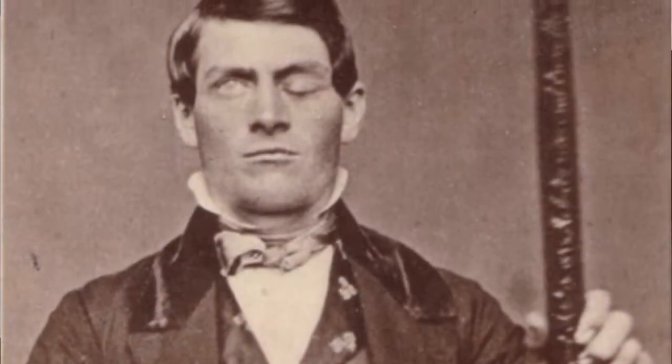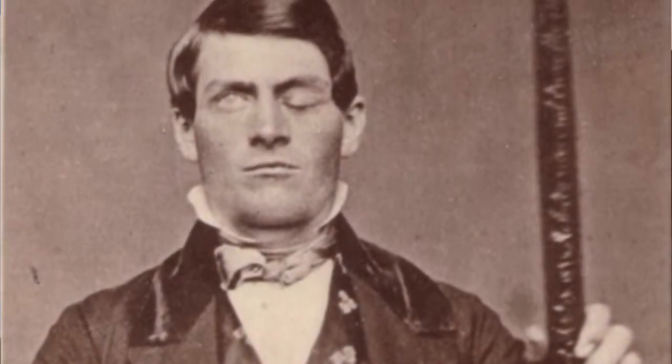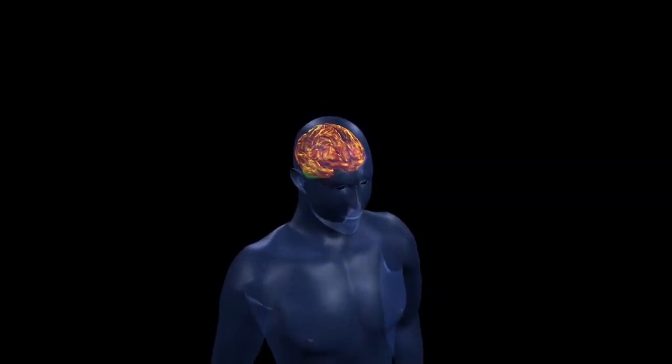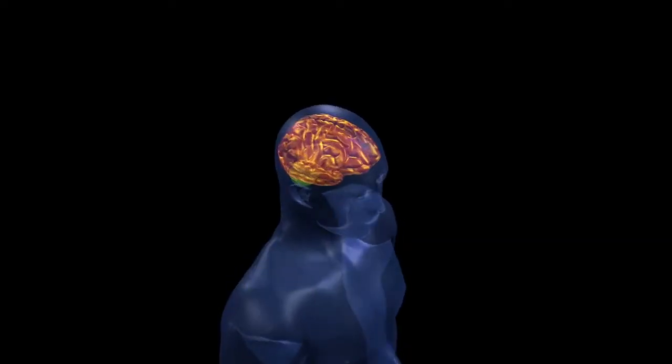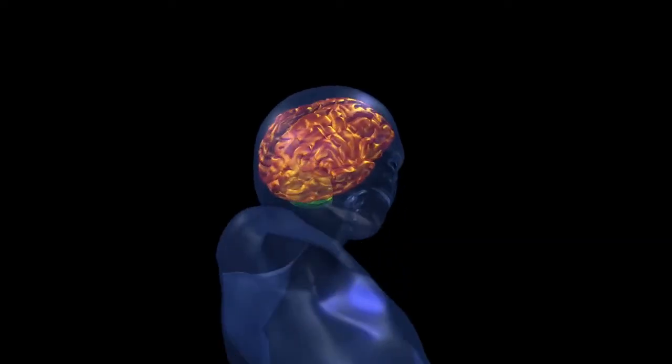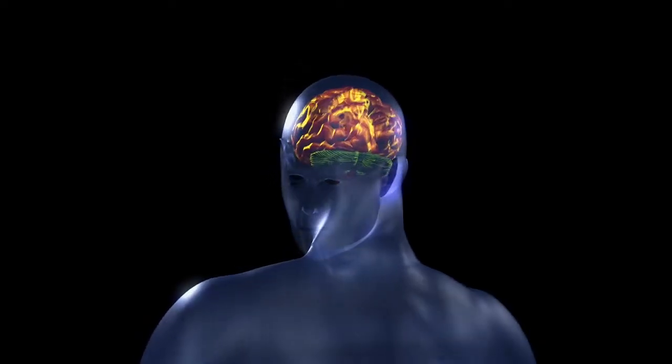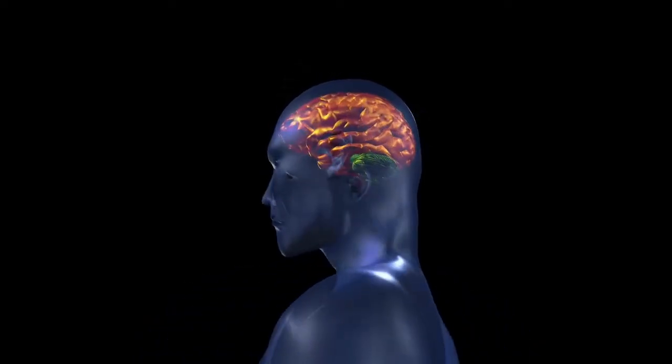Phineas Gage suffered a catastrophic injury when a tamping iron from his work on the railroad shot through his frontal lobe, causing permanent brain damage. But somehow, he survived. His doctor recorded his change in behavior and demeanor and associated that with the location in his brain.